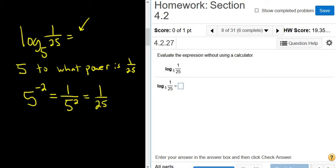So negative 2 should be the answer, because 5 to the negative 2 is equal to 1 over 25. Let's go ahead and type it in.